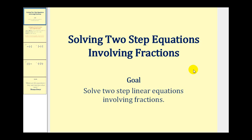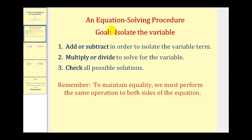Welcome to another video on solving two-step equations. This video will deal with two-step equations with fractions. When solving a two-step linear equation, the goal is to isolate the variable on one side of the equation. We do this by first adding or subtracting to isolate the variable term, then multiplying or dividing to solve for the variable, and then checking our answers. It is important to remember that to maintain equality, we must perform the same operation on both sides of the equation.